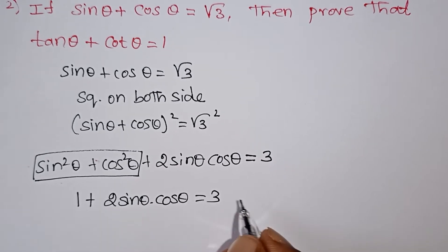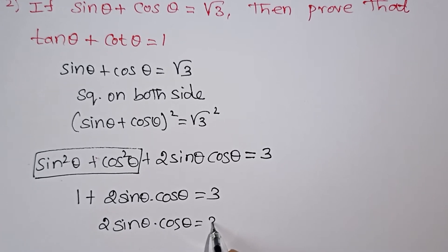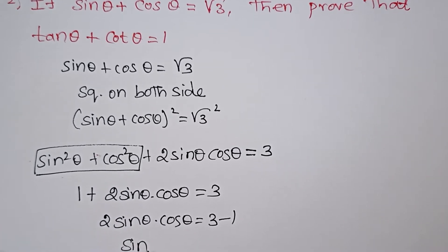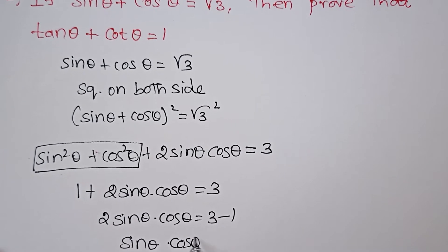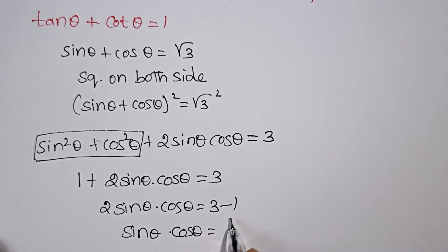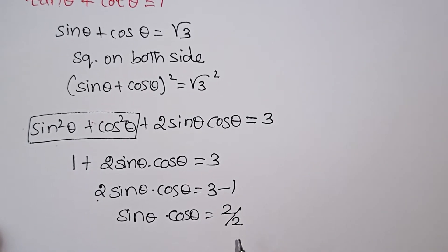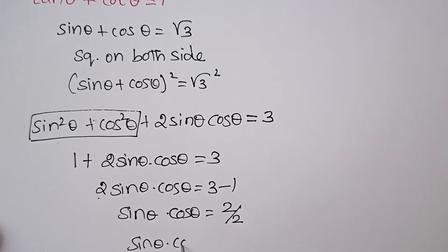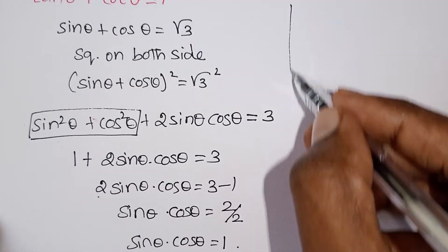Using the first identity, sin²θ plus cos²θ equals 1. So: 1 plus 2 sin θ cos θ equals 3. Therefore 2 sin θ cos θ equals 2, which gives sin θ cos θ equals 1.